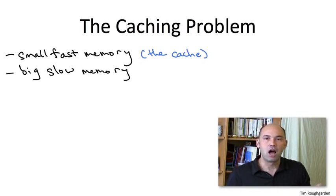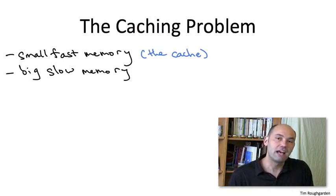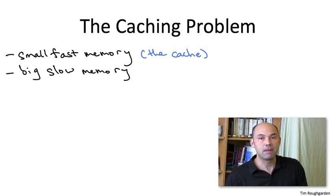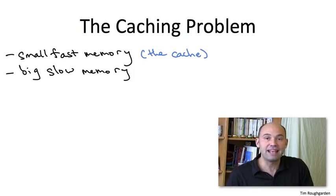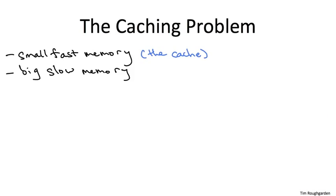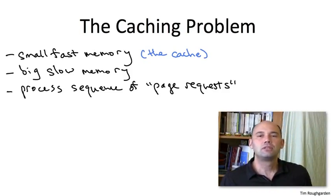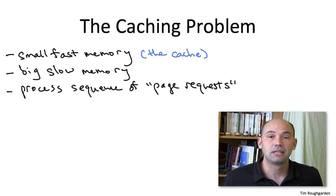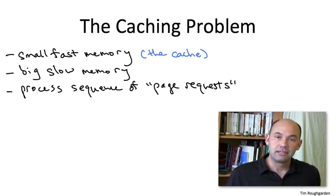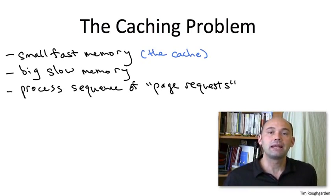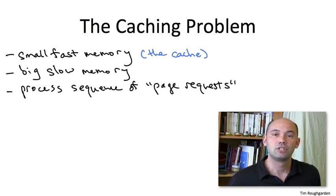Just to mention a couple of really obvious examples, you could imagine the small fast memory being something like an L2 cache and the big slow memory being main memory, or perhaps main memory is the fast memory and the big slow memory would be disk. Now your task in the caching problem is to process what we're going to call a sequence of page requests. So a page request just means that the client wants to access something in memory, and it's guaranteed to be in the big slow memory. But if it's not already in the small fast memory, then you've got to bring it in. You've got to put it there for the subsequent access.